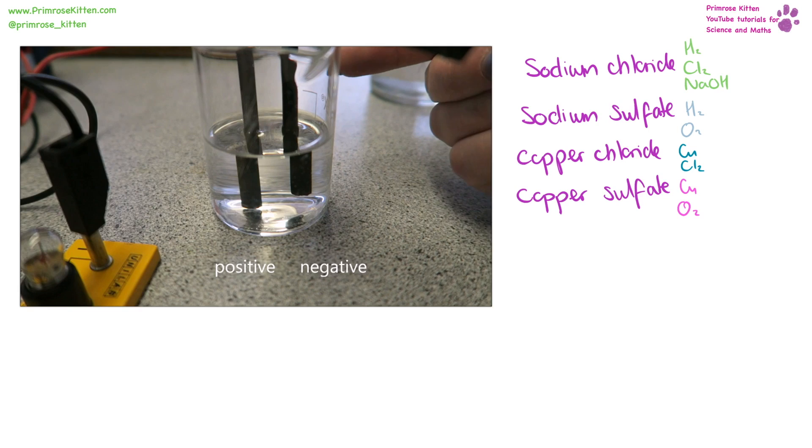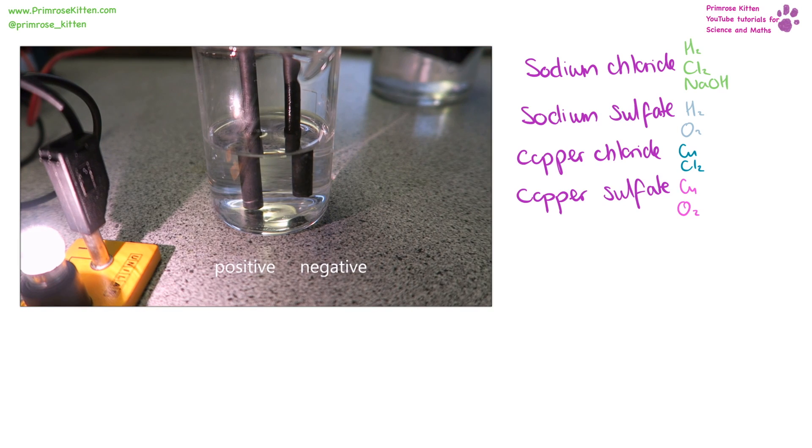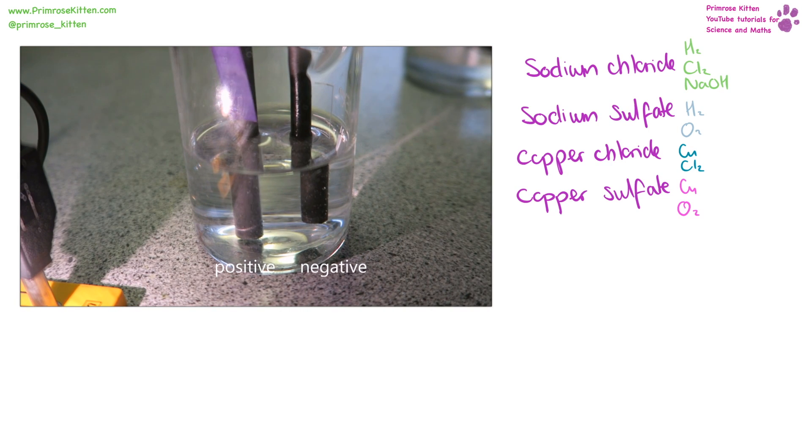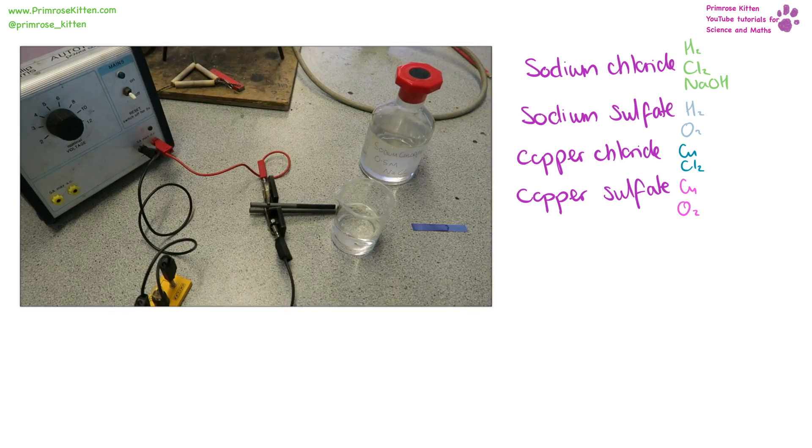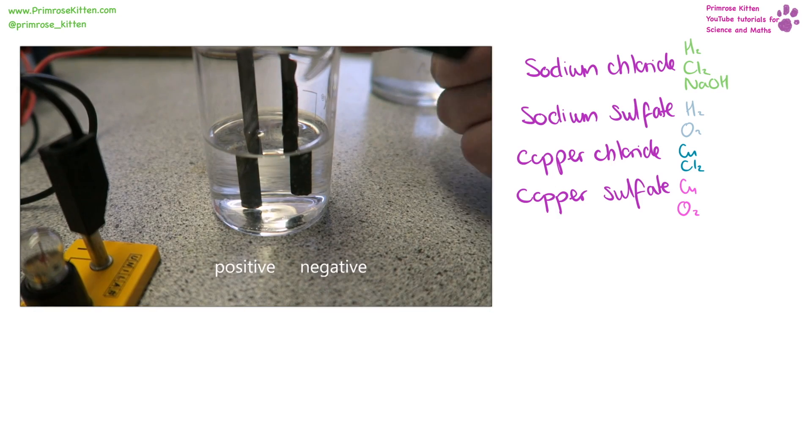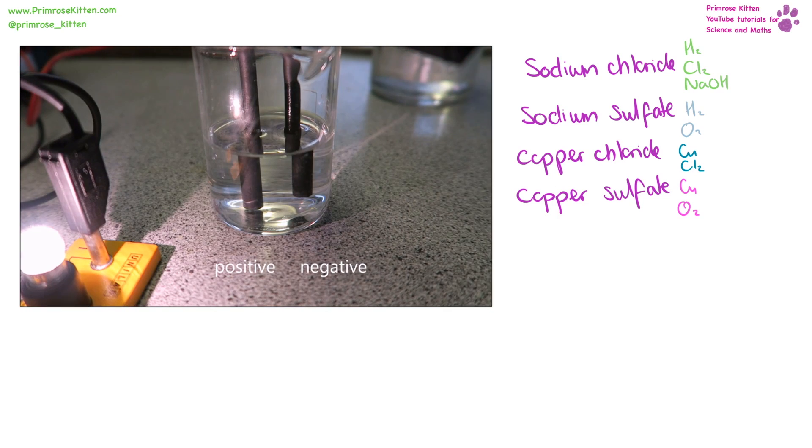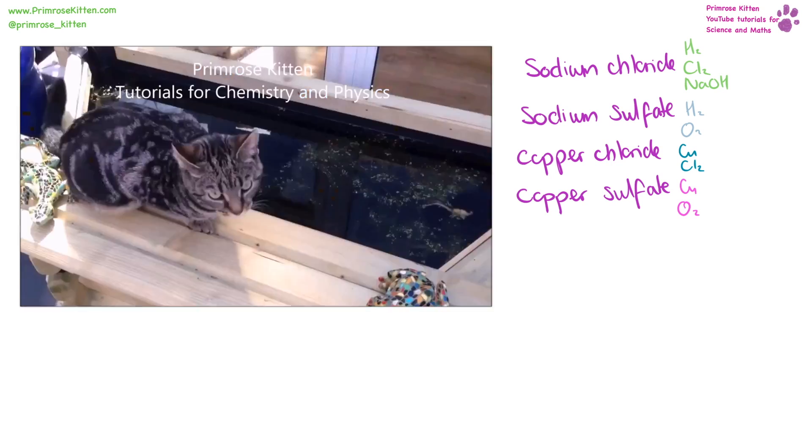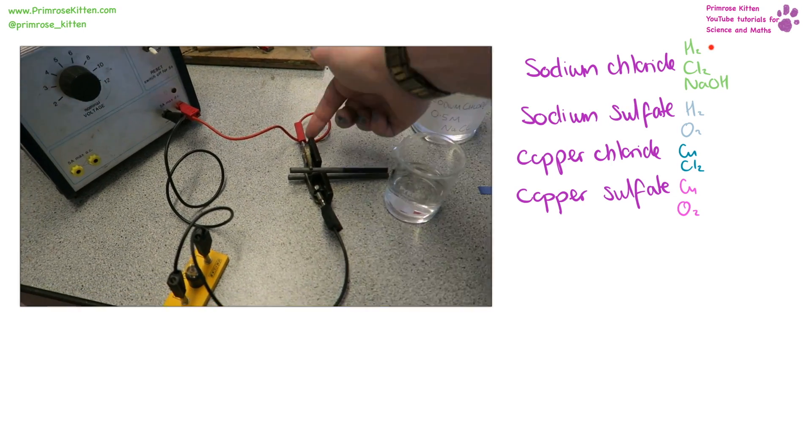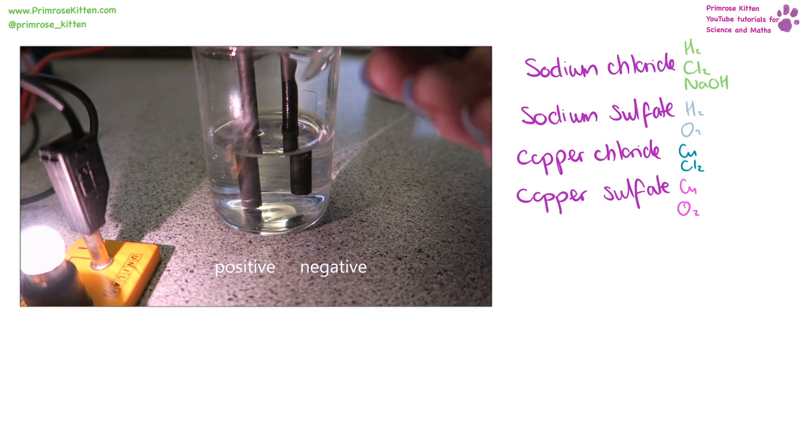When we set up electrolysis, you need a positive and negative electrode and a light bulb there just to check that electricity is flowing. You can see bubbles collecting around the positive and negative electrode. Sometimes this might be a metal collecting, as in the case of copper, collecting here and here in copper sulfate and copper chloride. You can test for all of the different gases coming off, for example hydrogen, chlorine, and oxygen.